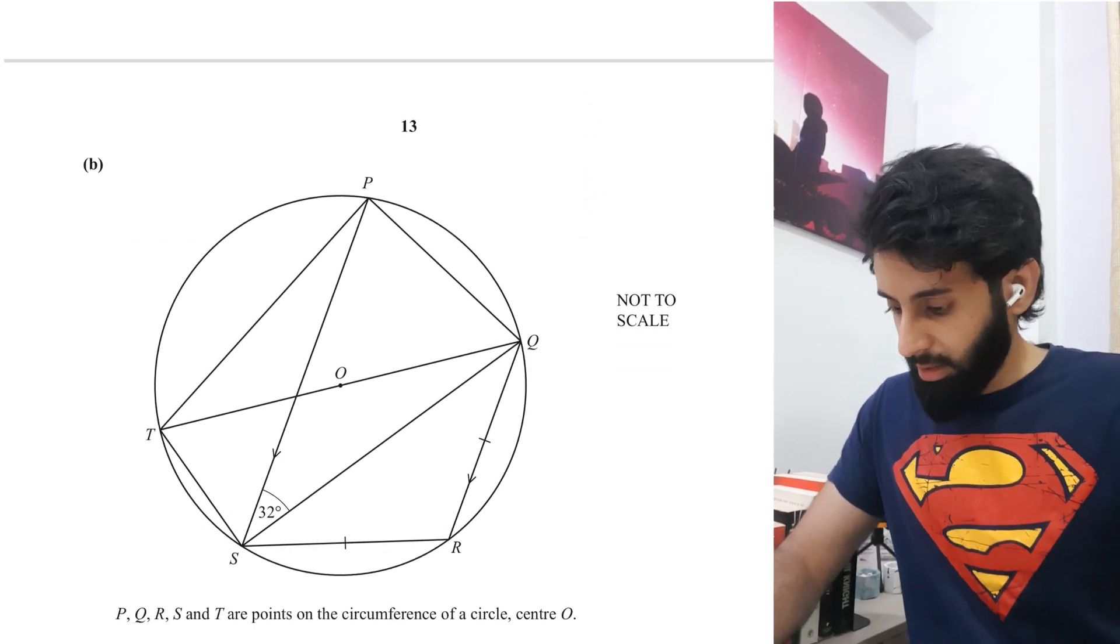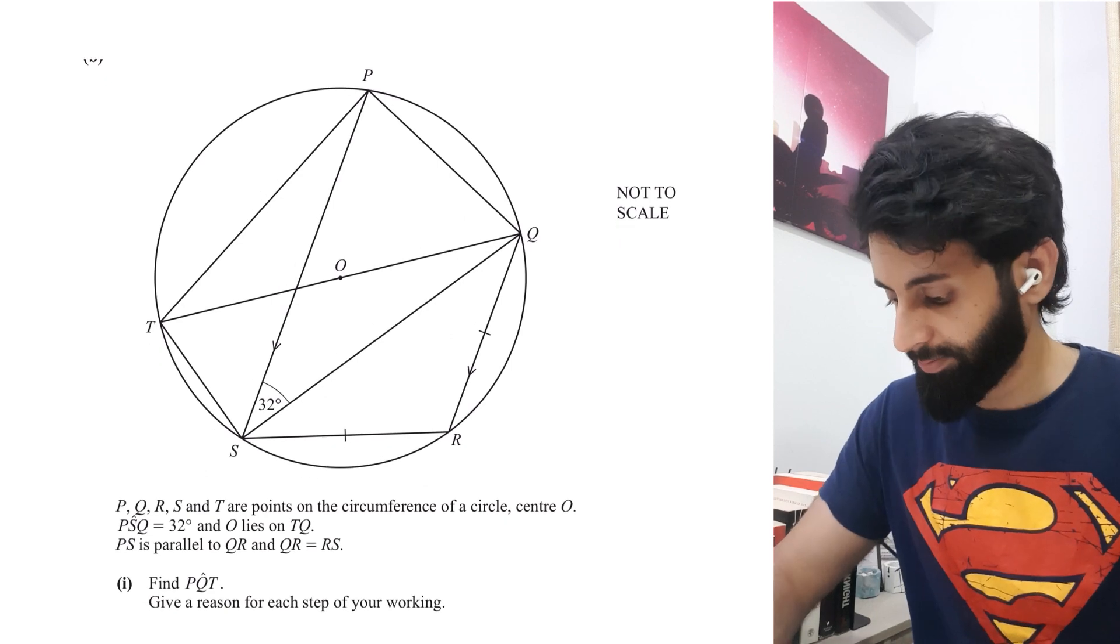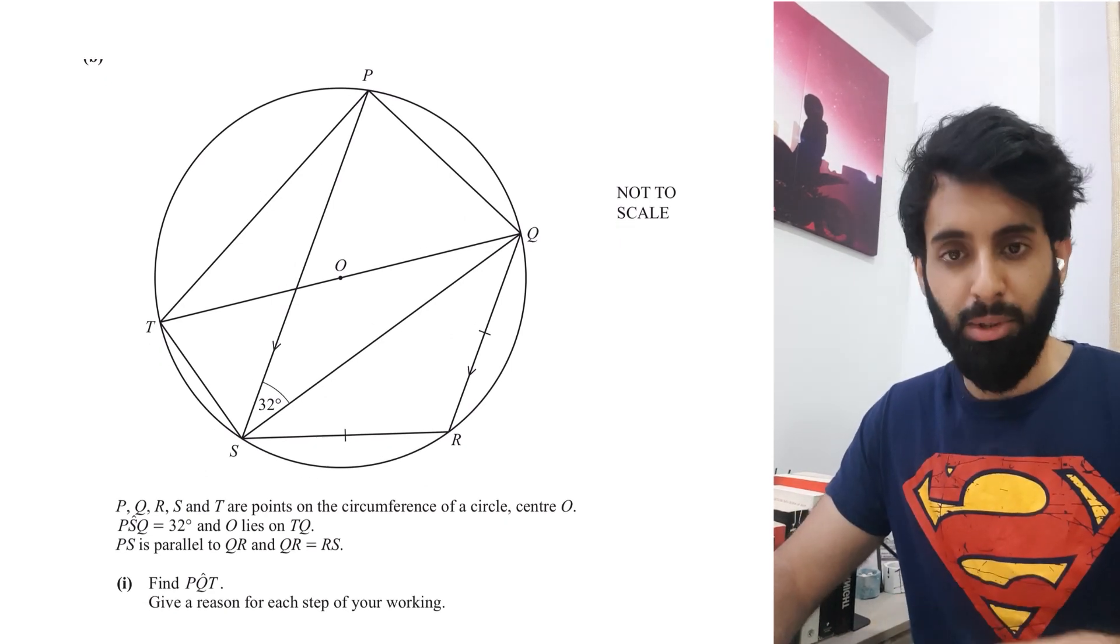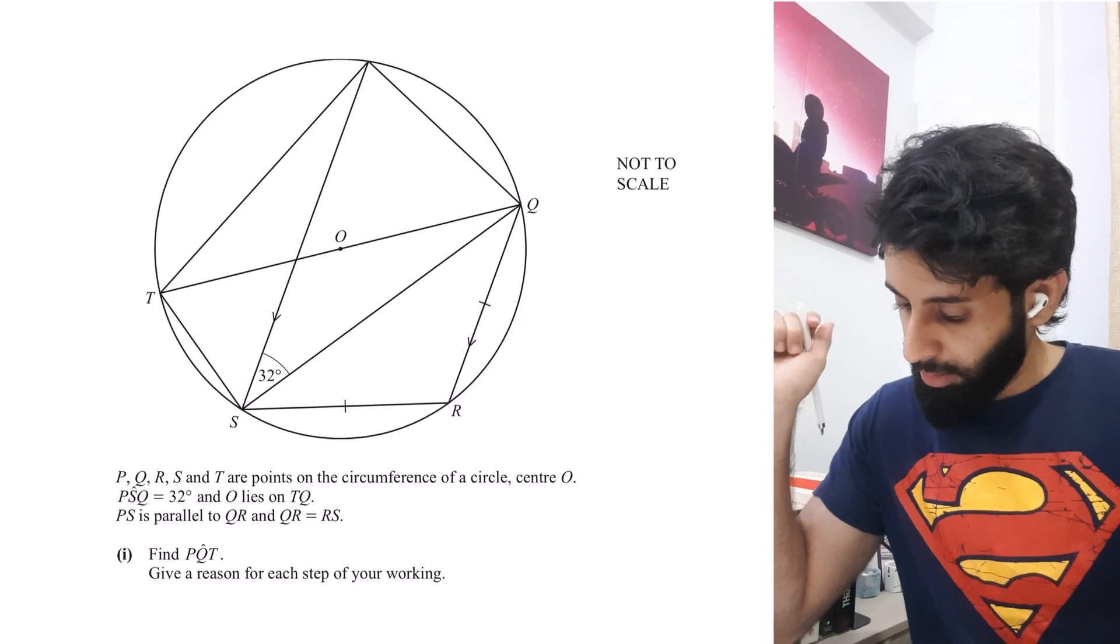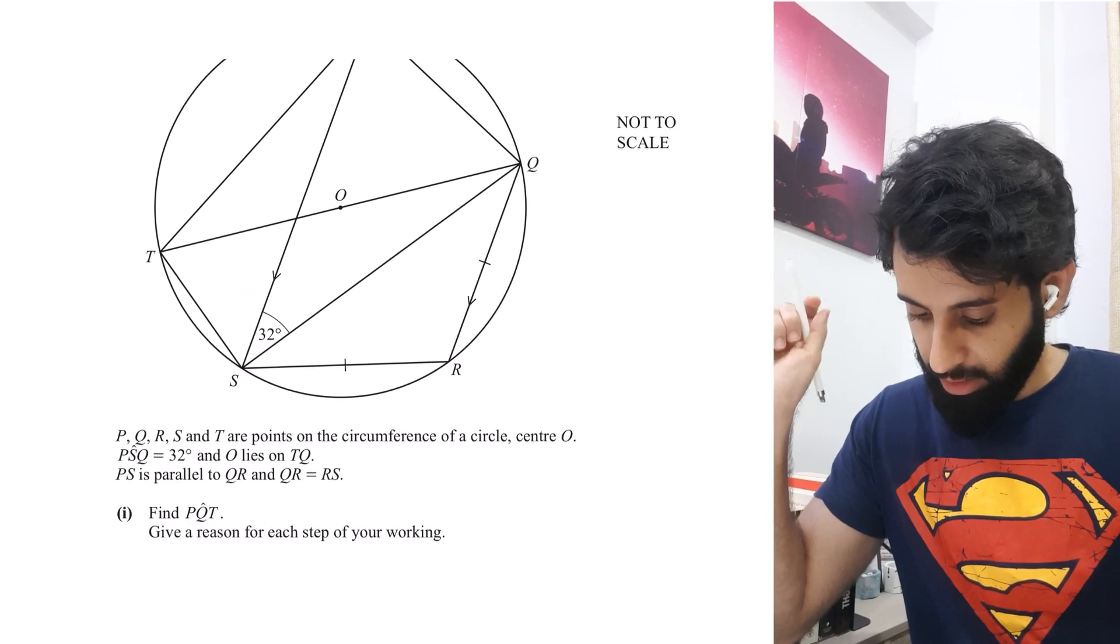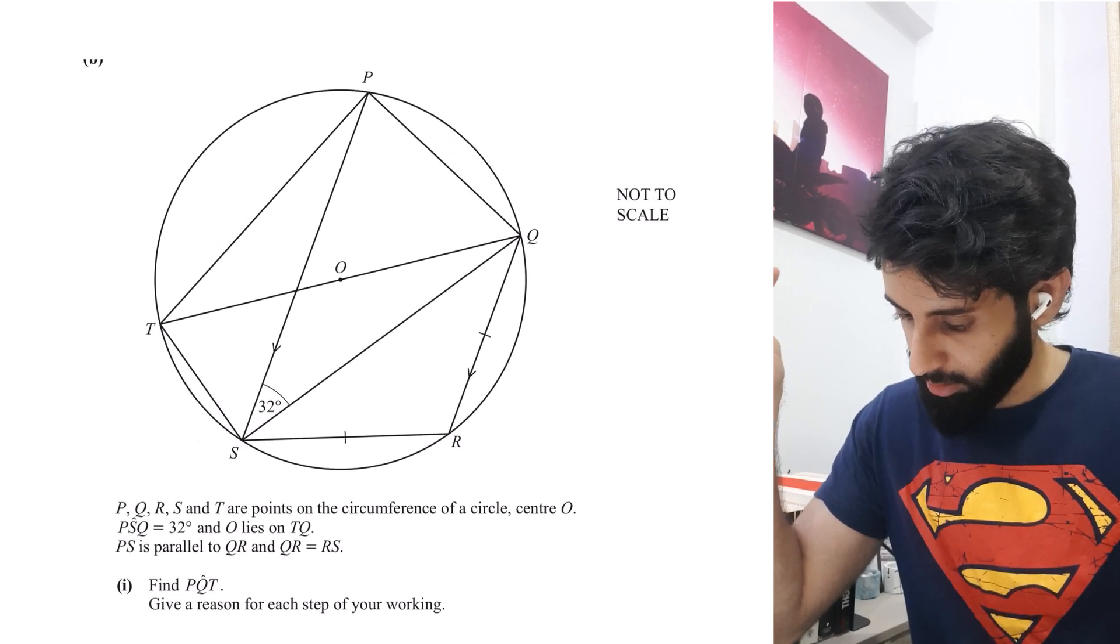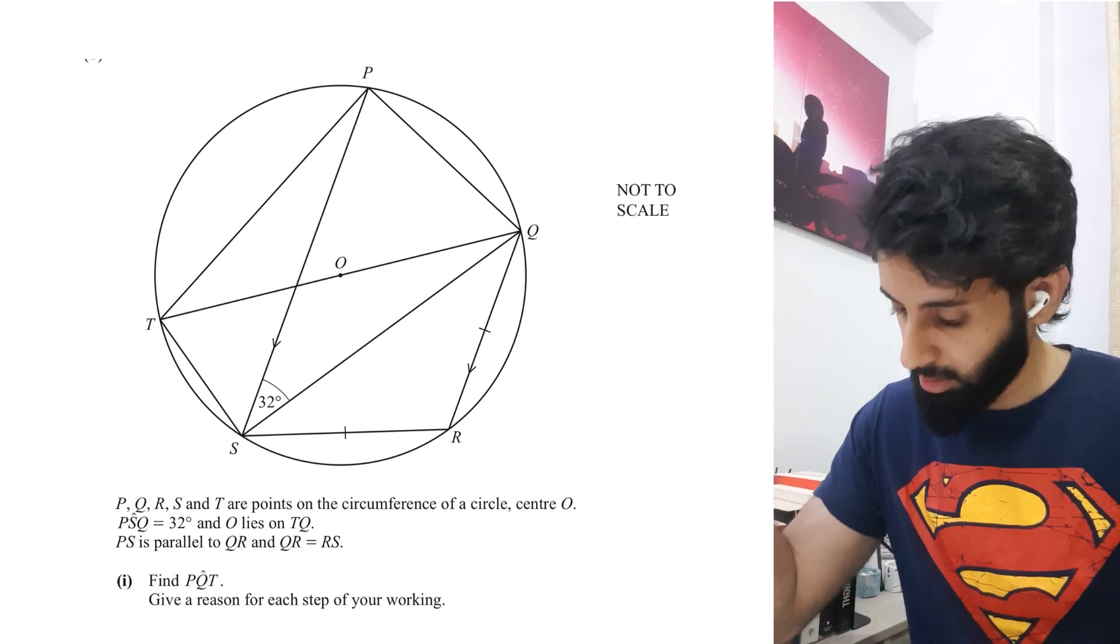Anyway, so here's part B. This is a bit of angle properties and angle properties of circles. P, Q, R, S, and T are points on the circumference of a circle, center O. Make sure you keep looking at the circle simultaneously.